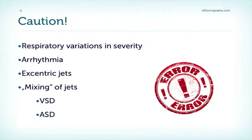Where are the problems and the pitfalls? First of all, you have to consider that the degree of TR varies much more with respiration than the degree of MR. In arrhythmia, the degree can also vary from beat to beat. You will underestimate the severity of TR if you have eccentric jets, just like you underestimate the severity of MR.